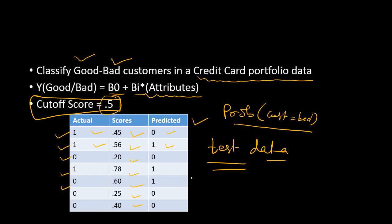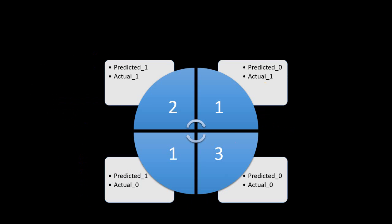The confusion matrix gives you a count of the number of matches and mismatches in a tabulated form. Although the name is confusion matrix, it is not confusing at all — it is very simple. It is just a count of your matches and mismatches. Here is how a confusion matrix looks: we take the actual and predicted values and simply take a count of each combination.